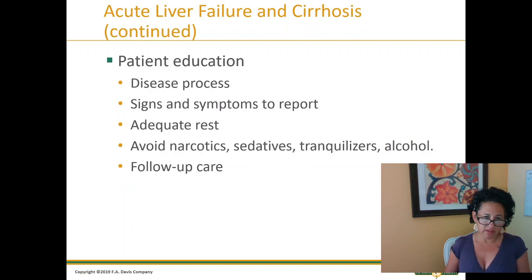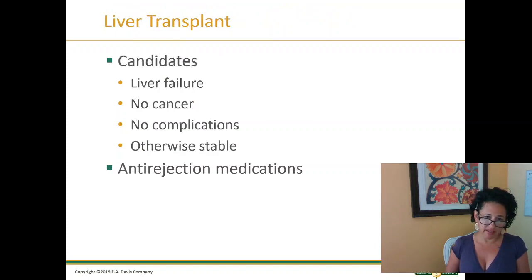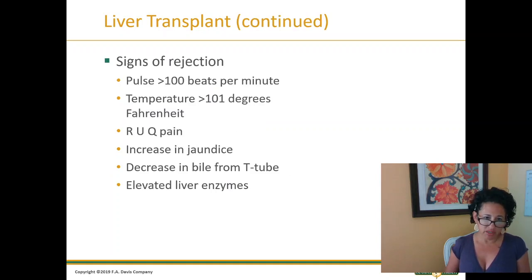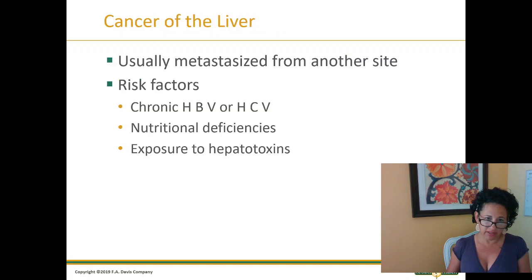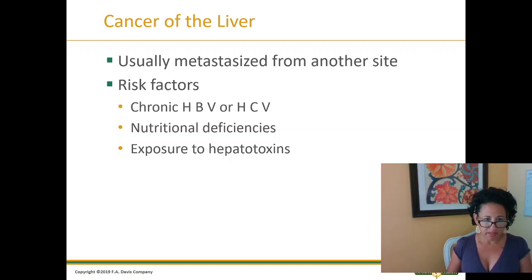Nursing diagnosis options and patient education. For liver transplant candidates: liver failure, no cancer, no major complications, otherwise stable. They will need anti-rejection medications. Signs of rejection after liver transplant include elevated pulse, elevated temperature, increased right upper quadrant pain, increased jaundice, and elevated liver enzymes.